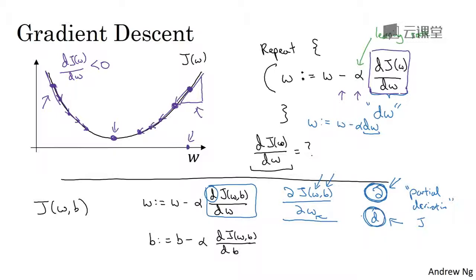This is one of those funny rules of notation in calculus that I think just make things more complicated than they need to be. But if you see this partial derivative symbol, all it means is you're measuring the slope of the function, with respect to one of the variables. And similarly, to adhere to the formally correct mathematical notation in calculus, because here j has two inputs, not just one, this thing at the bottom should be written with this partial derivative symbol.